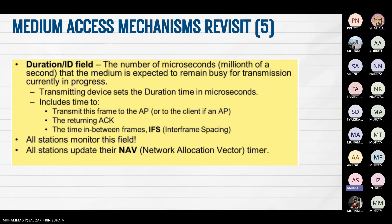The Duration ID field shows the number of microseconds that the medium is expected to remain busy for the transmission currently in progress. The transmitting device sets the duration time in microseconds, including time to transmit this frame to the AP or to the client, the returning acknowledgement, and the inter-frame spacing (IFS). All stations monitor this field and update their Network Allocation Vector (NAV) timer accordingly.